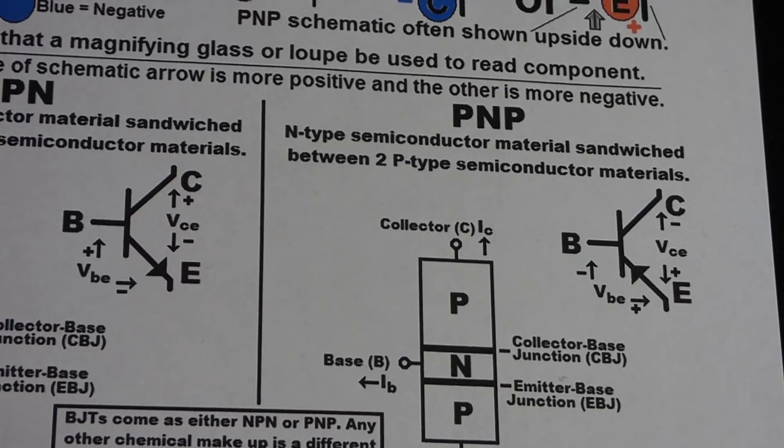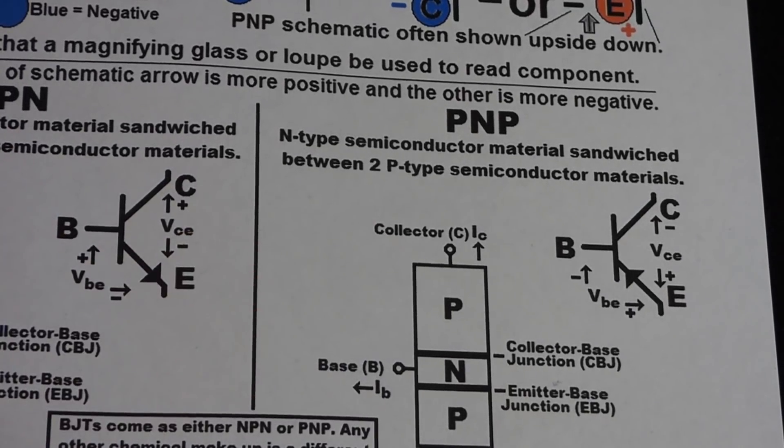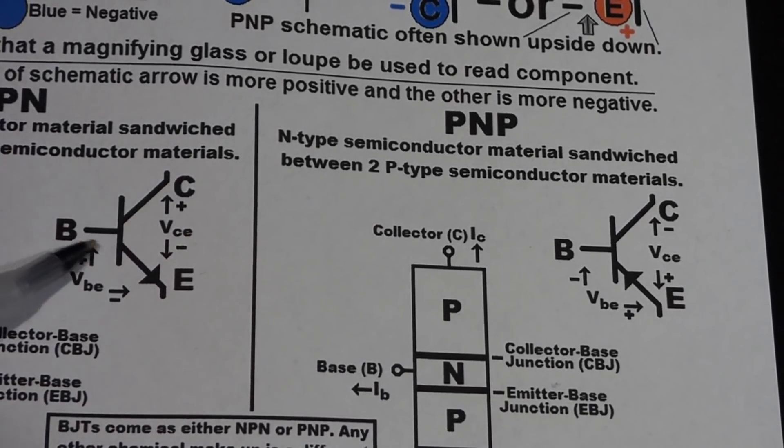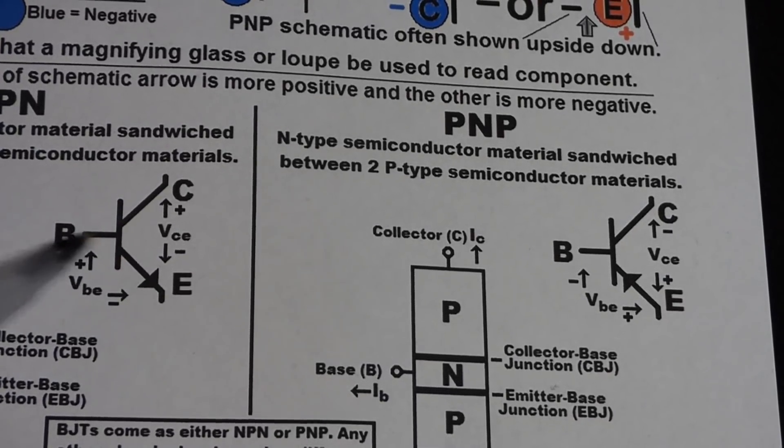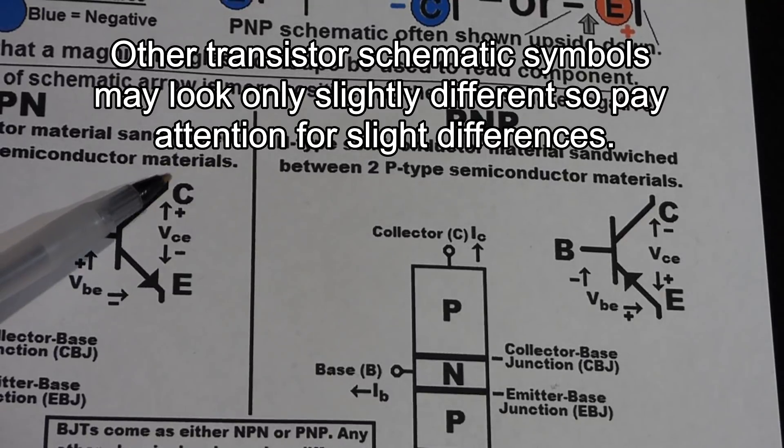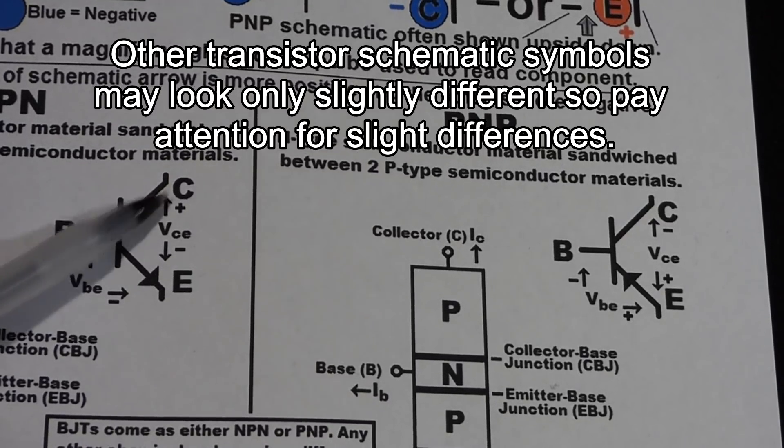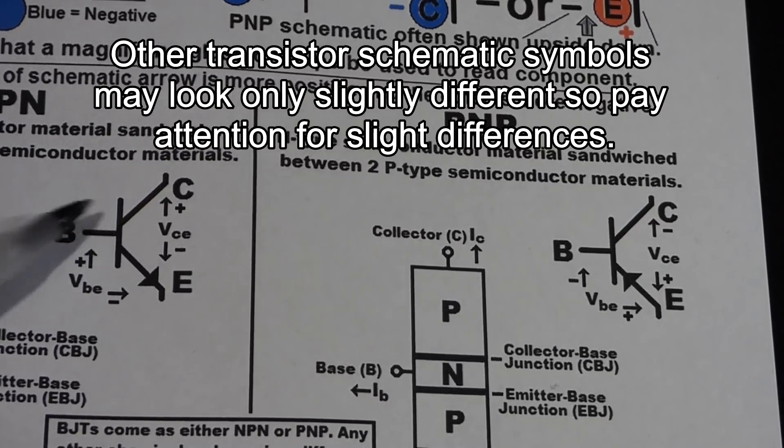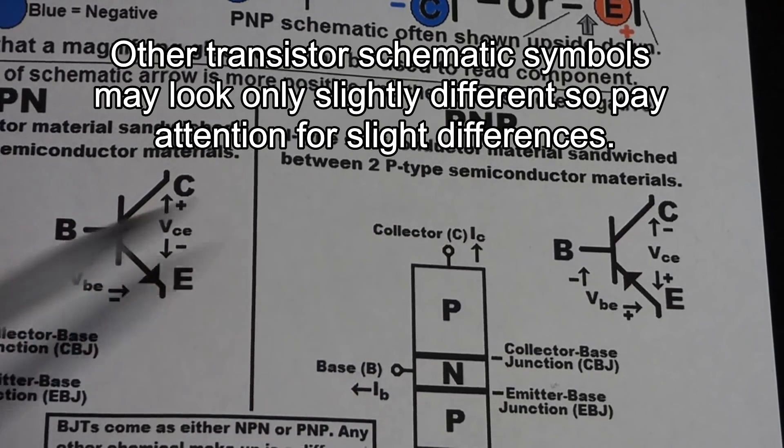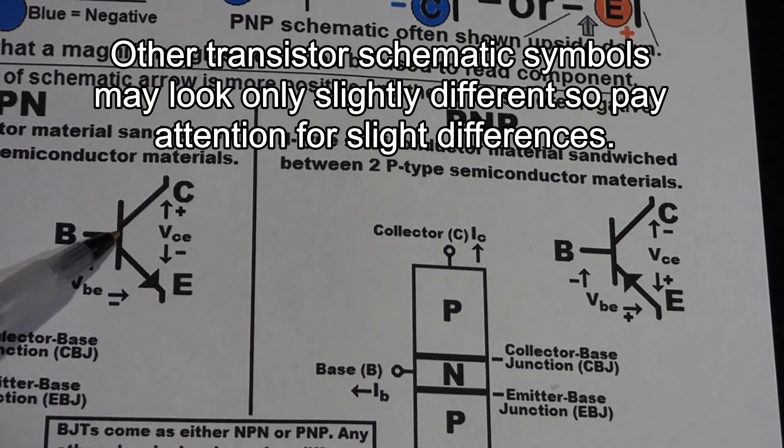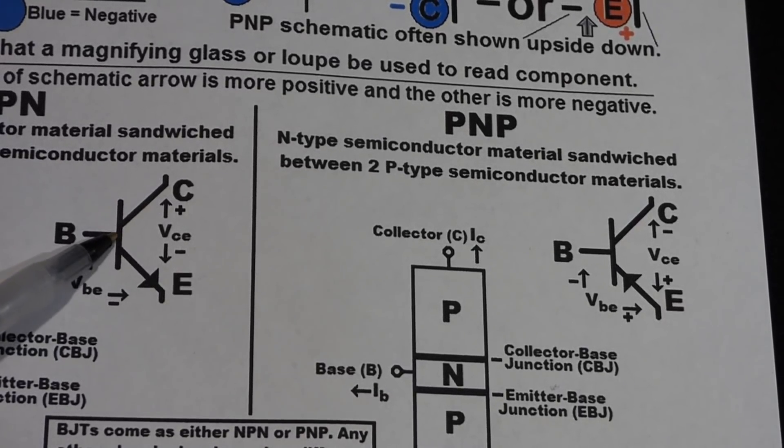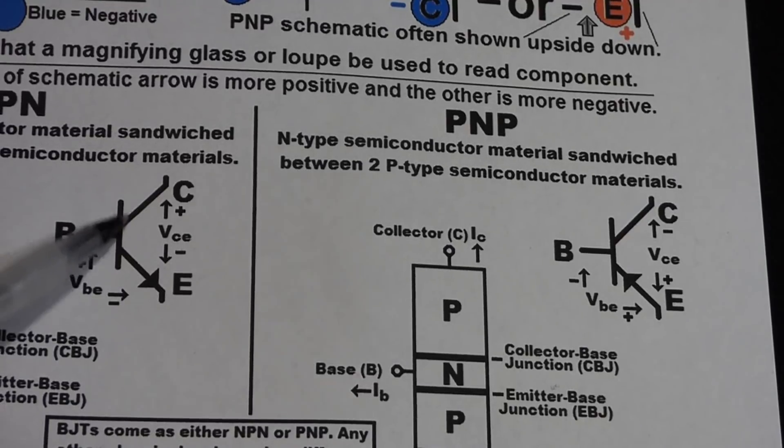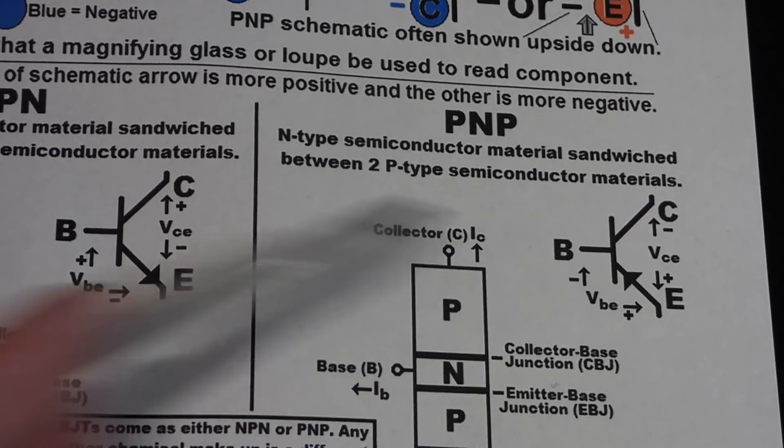And of course, there's the schematic symbol. With the bipolar junction transistor, you have a line and then three lines coming out of it. The line without an arrow, off to the side here, is the collector. Same with the PNP. The one that comes to the middle here, that's the base. And it's always on the other side of the collector and the emitter, as far as this dividing line goes.